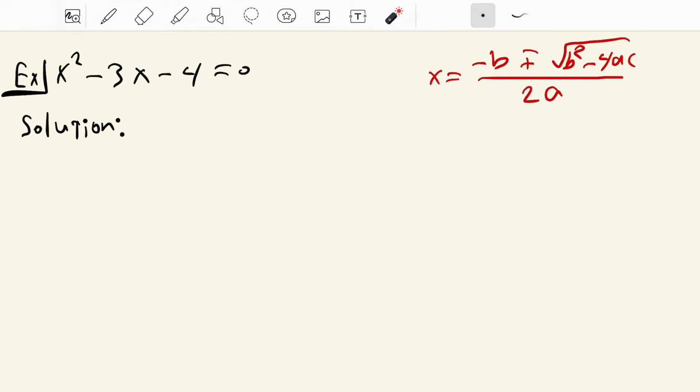We have this formula: x equal to negative b plus minus square root of b squared minus 4a times c over 2a.